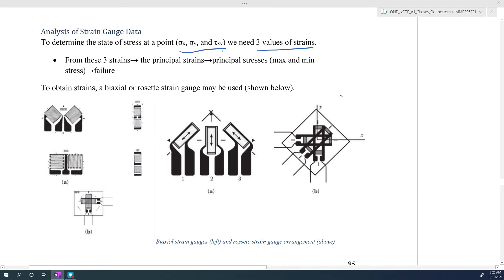To obtain these different strains, we need to use a strain gauge rosette or biaxial strain gauge. The biaxial strain gauges are shown on the left, and then the rosettes are shown on the right.